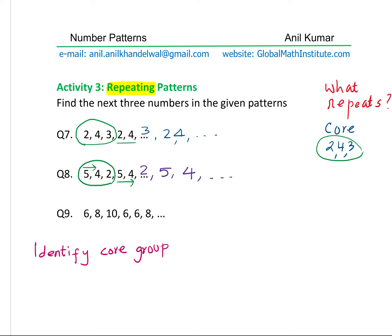Question number 9 is kind of tricky — a slightly difficult question. The numbers are 6, 8, 10, 6, 6, 8. It starts repeating from the second 6, so the core group is 6, 8, 10. We already have the first two numbers from our core group: 6 and 8. The next two numbers will be 10 and 6, and then so on. That is how we work with repeating patterns.